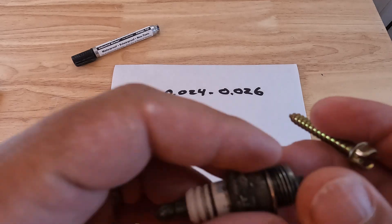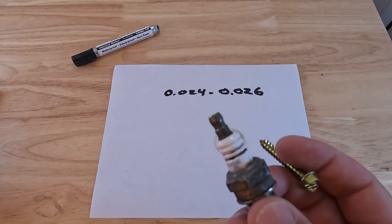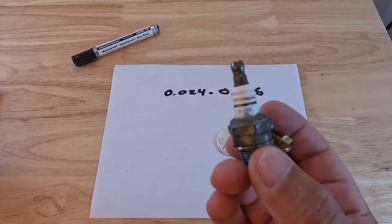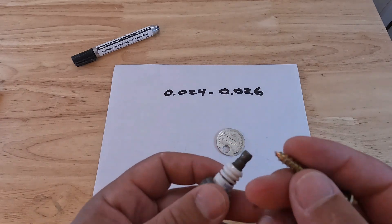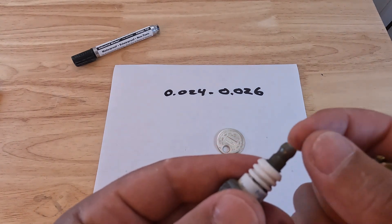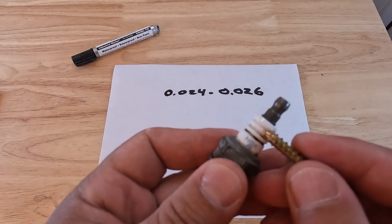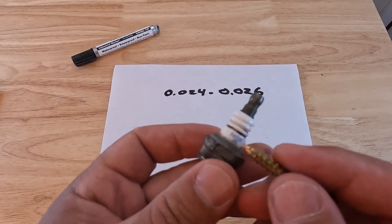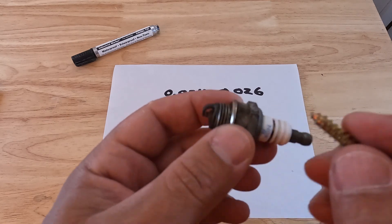We could quickly go over what the actual components on a spark plug are. You could see here, this piece right here, this is what our spark plug cap plugs into. That's called the terminal. This white piece is our insulator, and then this is the body or the shell of the spark plug.